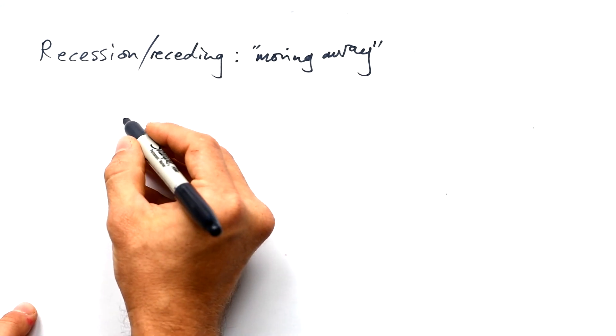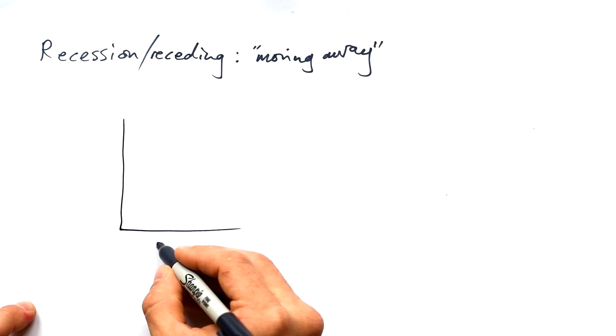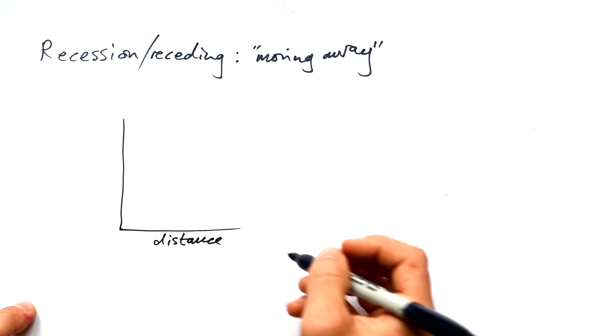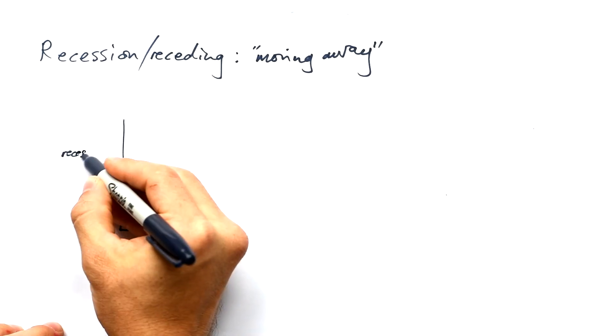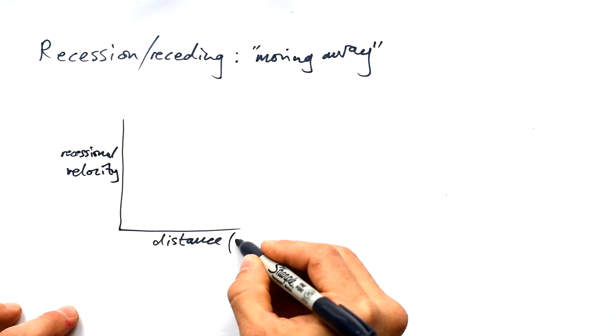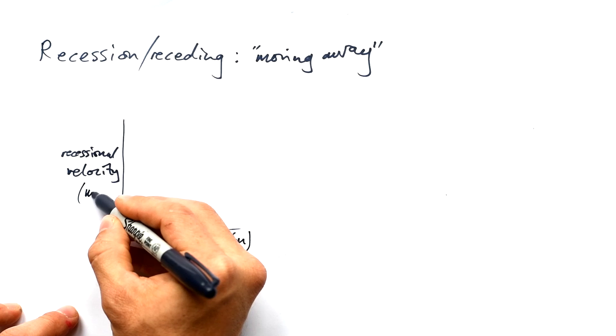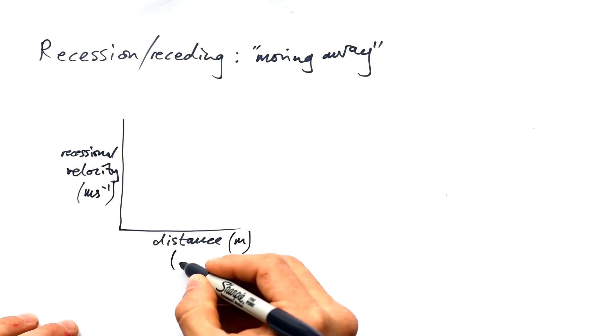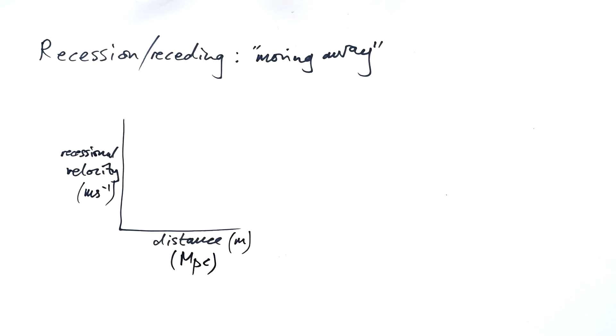Now what we can do is draw a graph, and we can put distance that a galaxy is away from the Earth on the x-axis, and we can put the recessional velocity on the y-axis. We can use meters for distance and meters per second for recessional velocity, but more often than not you'll see distance measured in mega parsecs. If you don't know what a parsec is, have a look at my parallax video. Parsec is short for parallax second, it's just a very big unit of length.